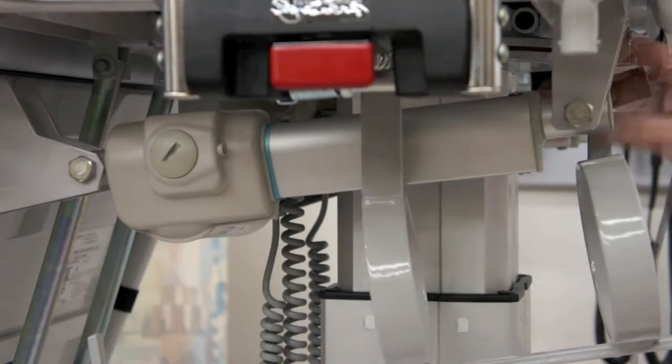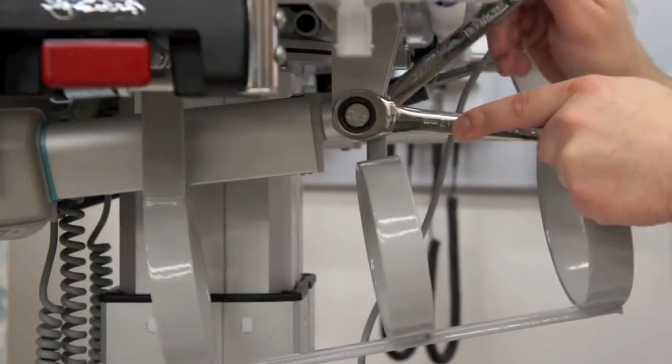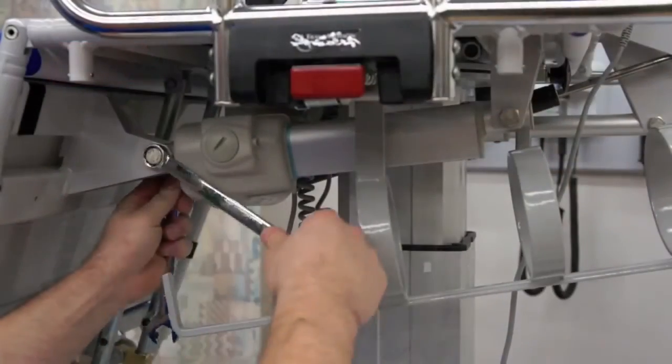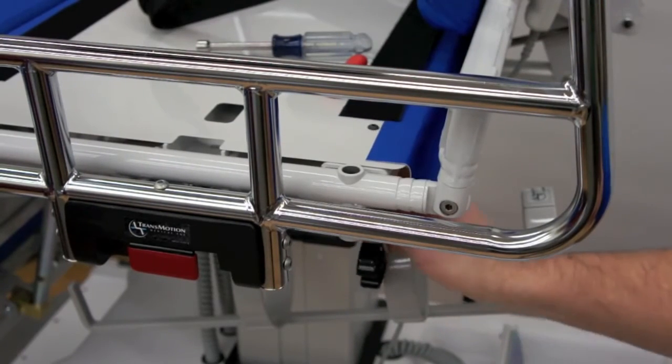Then secure with the nuts and tighten. Be careful and do not over tighten. They will begin to make a squeaking noise when tight enough. Reattach the seat pan and take the four screws and tighten until secure.